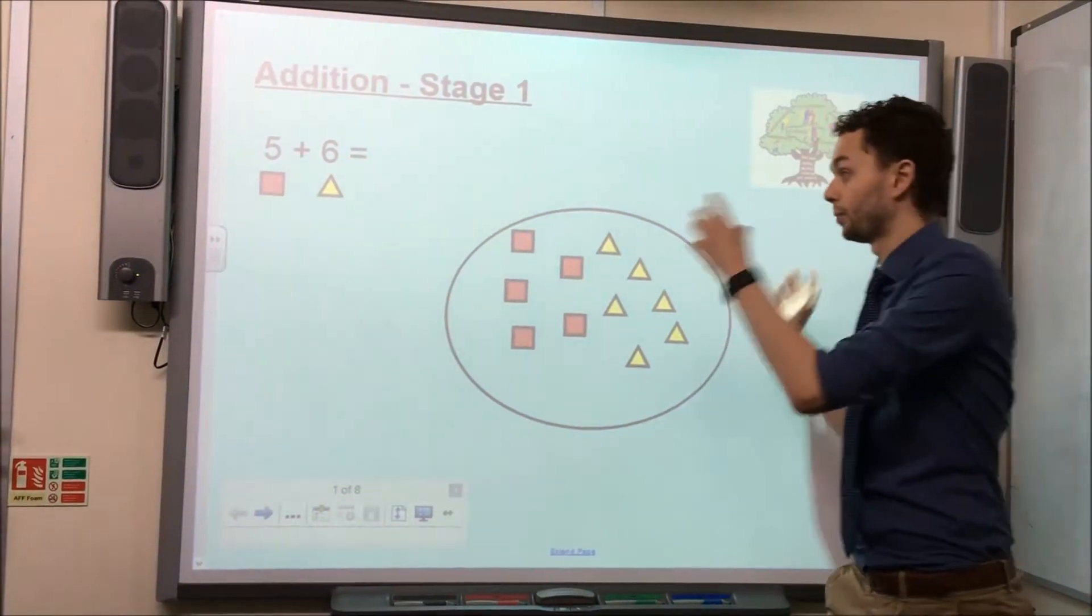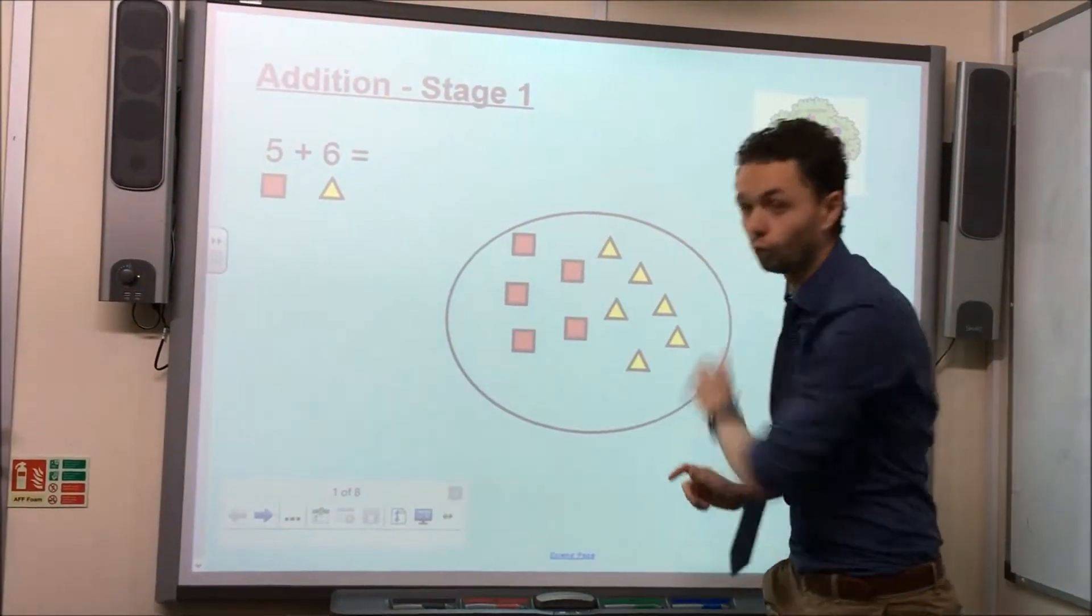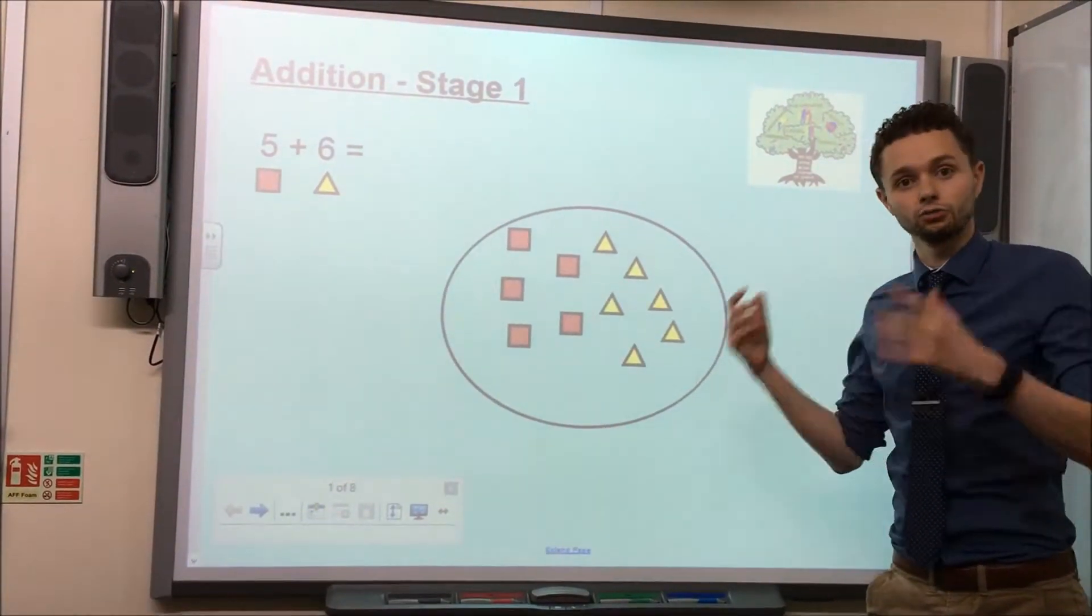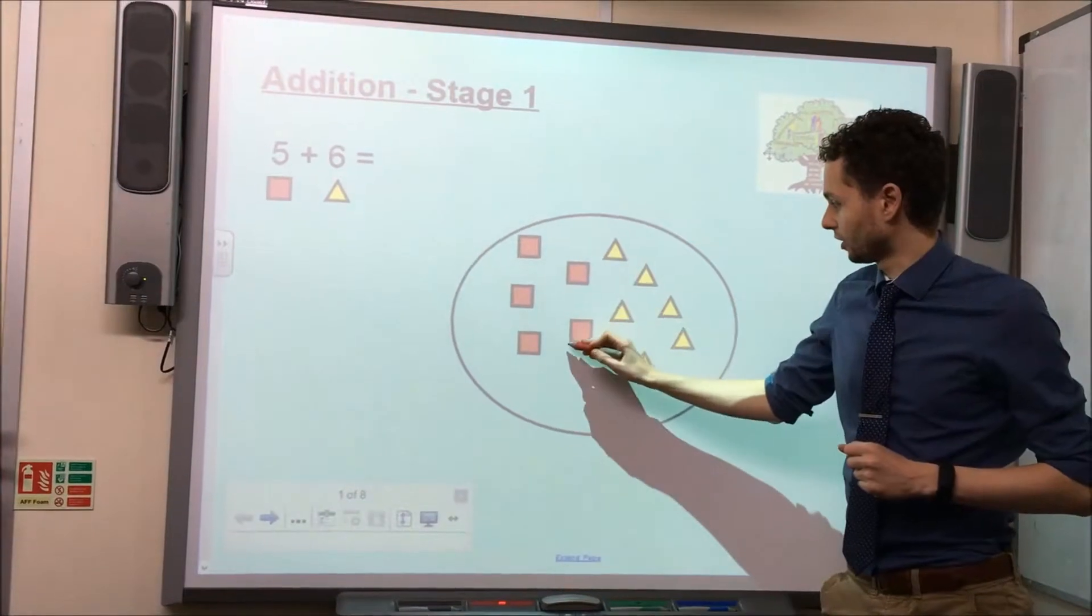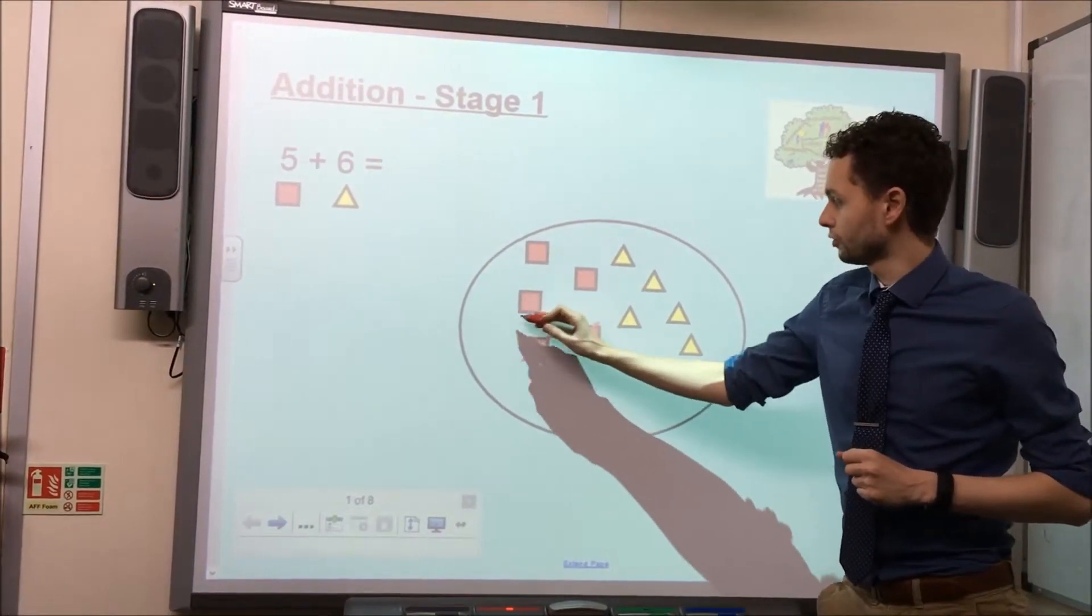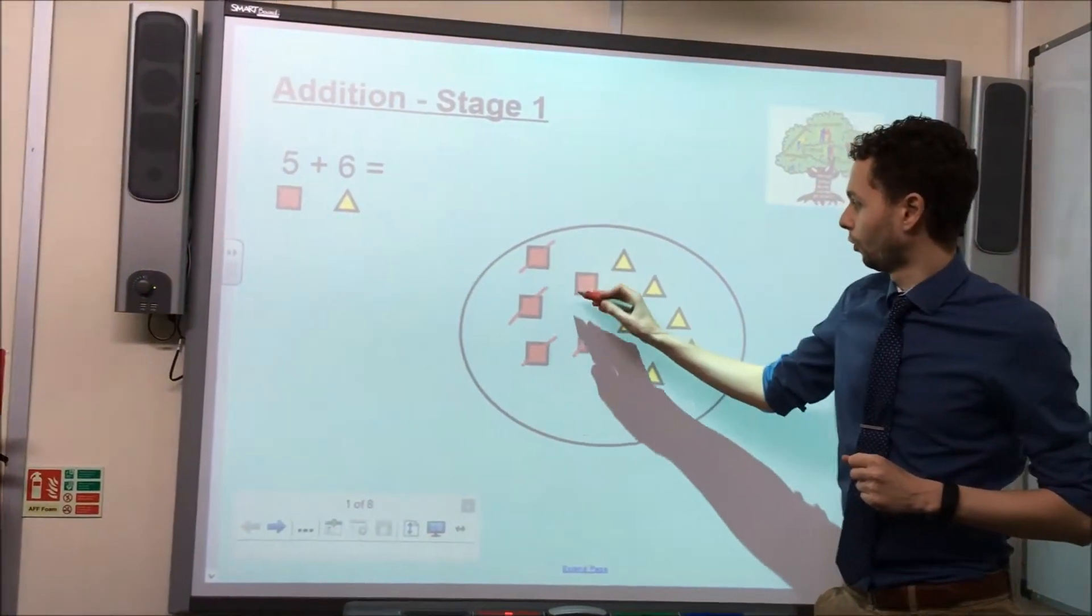Now I've counted out both numbers, I can combine them by counting all the objects in this circle to reach an answer. So let's start off with the squares. I've got 1, 2, 3, 4, 5.